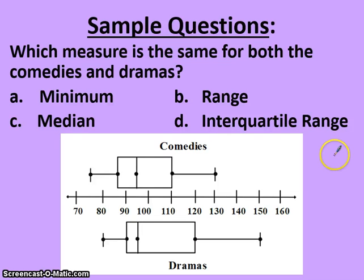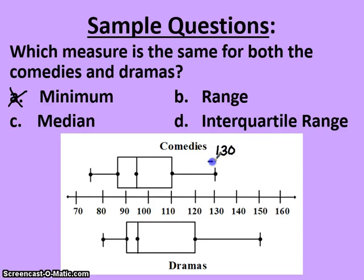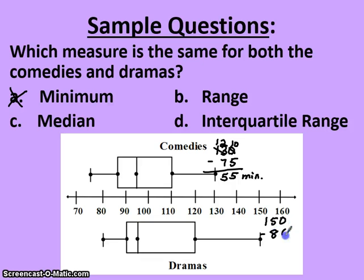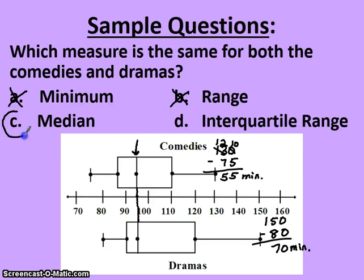Which measure is the same for both comedies and dramas? Let's work through the answer choices. The minimum for comedies is about 75 and for dramas is 80 — those are not the same, so we eliminate minimum. For the range, comedies go from about 75 to 130, giving roughly a 55-minute range. Dramas go from 80 to 150, giving a 70-minute range — so the ranges are not the same. Looking at the medians, the median for comedies is about 95 and the median for dramas is also about 95, so the medians are the same.